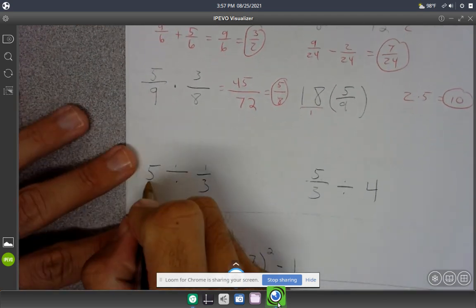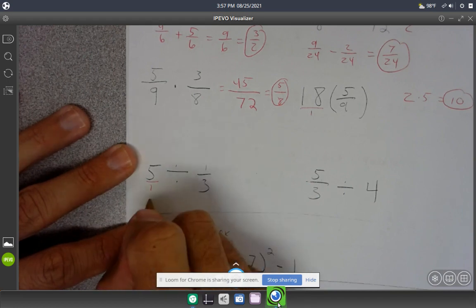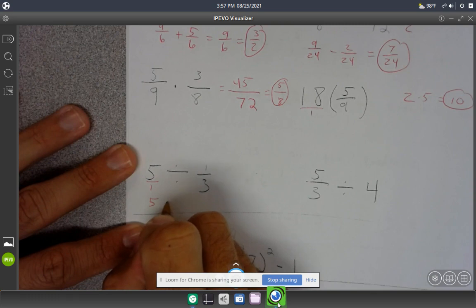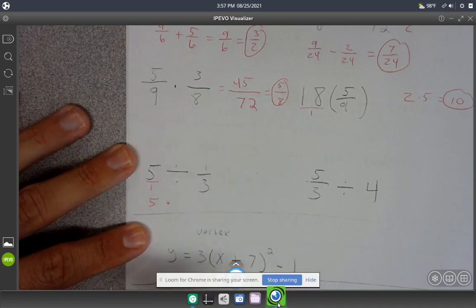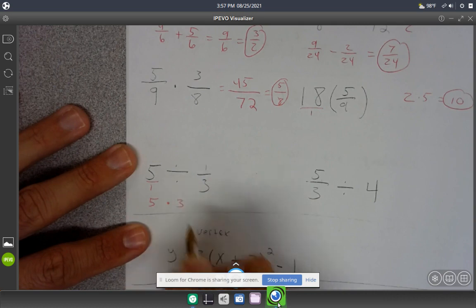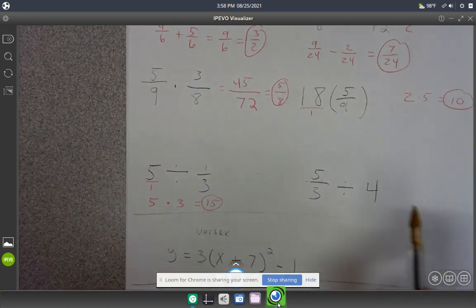For dividing fractions, use keep, change, flip. Bring down 5/1, change to multiplication, and flip the second fraction to 3/1. Then 5 times 3 equals 15.